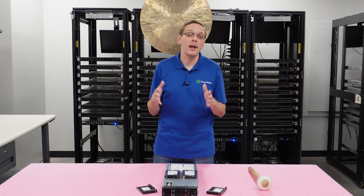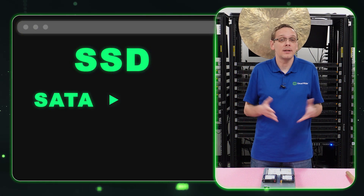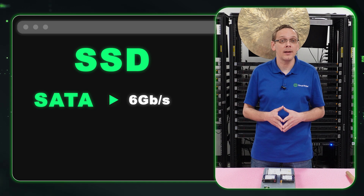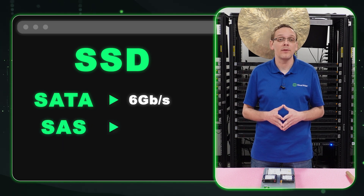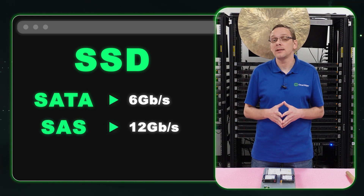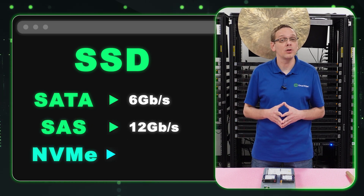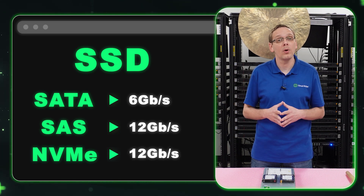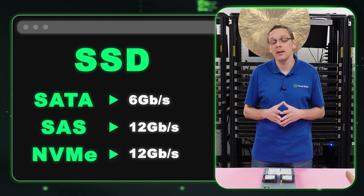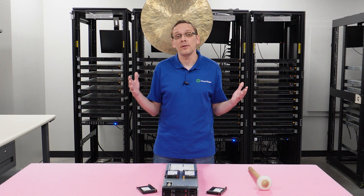For a SATA solid state drive the speed is going to be 6 gigabit per second. For a SAS solid state drive it's going to be 12 gigabit per second. And same thing for NVMe — it's going to be 12 gigabit per second. Now that we know a little bit more about the speeds, sizes, and different types of interfaces, let's show you how to install them.